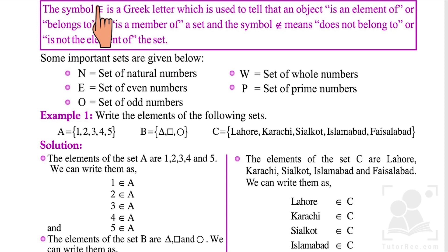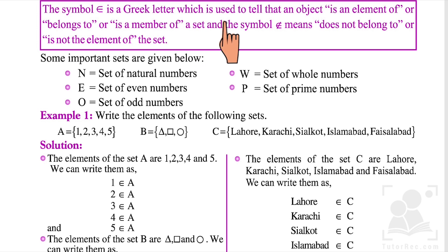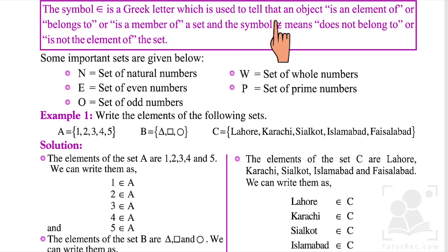So, the symbol ∈ tells us that an object belongs to or is a member of the set, and the symbol ∉ tells us the object does not belong to or is not a member of the set. For example, the set of days of the week: A = {Monday, Tuesday, Wednesday, Thursday, Friday, Saturday}. All these days are members or elements of set A, denoted by ∈. But if we add January to this set, we write: January ∉ A, meaning January is not an element of set A, so we use the ∉ symbol.